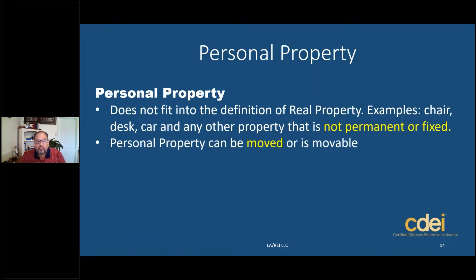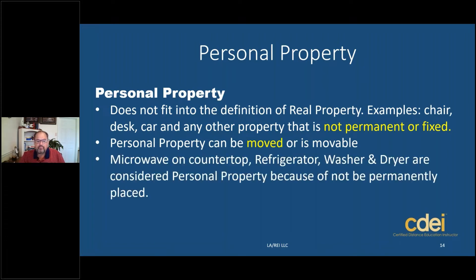Personal property can be moved — it's not permanent. For example, a microwave on a countertop, a refrigerator, a washer and dryer, furniture — all considered personal property because it's not permanently attached.